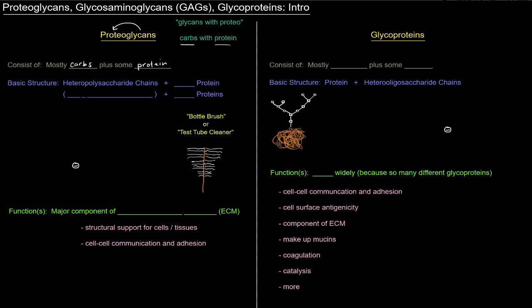So the basic structure specifically is a bunch of heteropolysaccharide chains, specifically called glycosaminoglycans, plus a core protein, and they're also sometimes linked proteins.